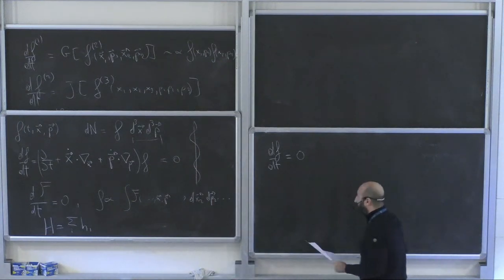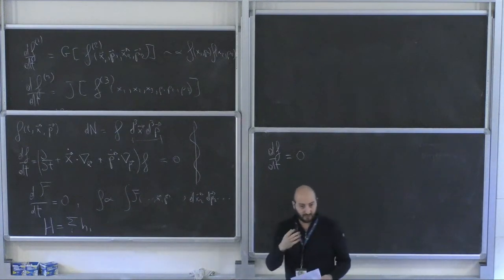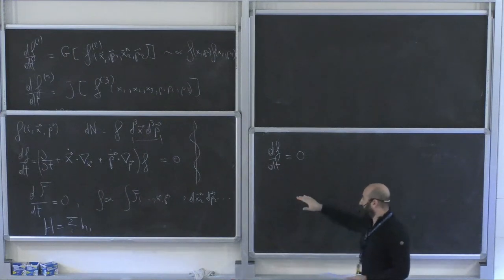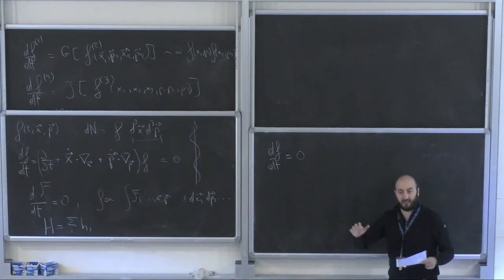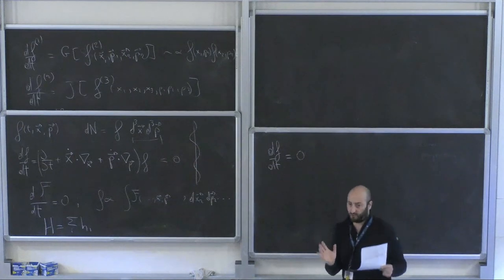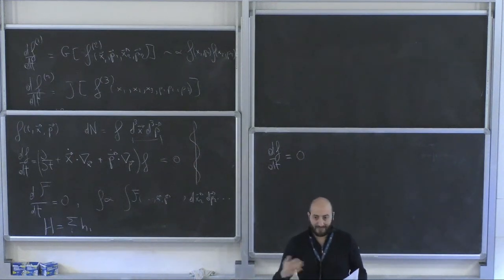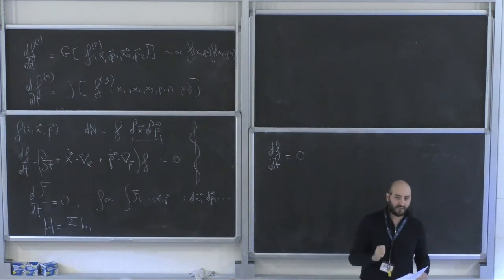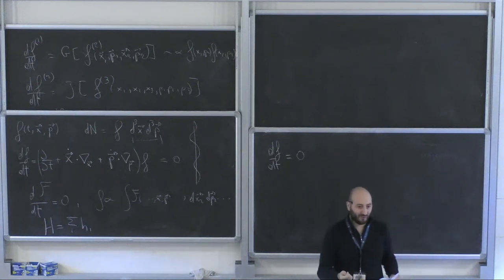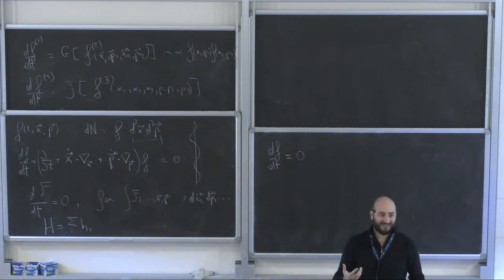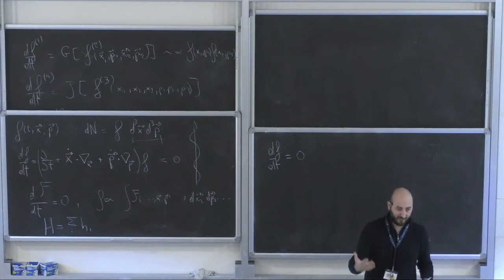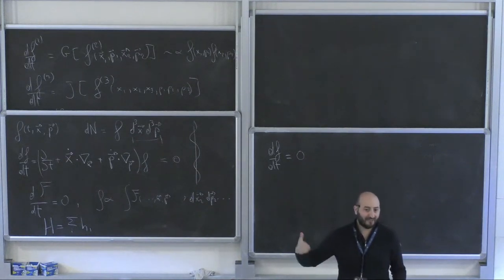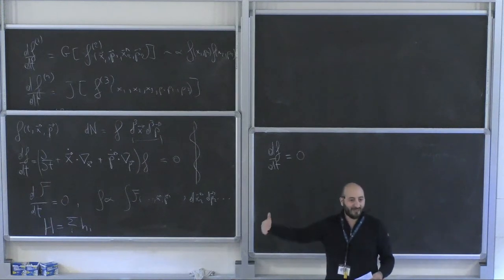One further thing that will help us is the empirical fact — which we will try to justify theoretically — that cosmic rays have a flux that is essentially isotropic to better than roughly the per-mill level. This fact suggests that you might want to use some sort of angular-averaged quantity to give a first description of the system, and then use angular-dependent quantities as corrections.